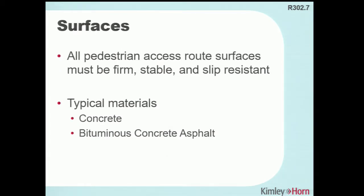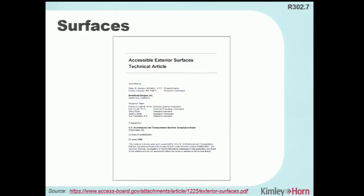All pedestrian access routes are required to be firm, stable, and slip resistant. There's no precise definition, but there is a U.S. Access Board research article on coefficient of friction. Basically, if you have concrete or asphalt you're going to be fine, but the article can tell you what alternative materials — such as those used as landscaping barriers — may also be acceptable.